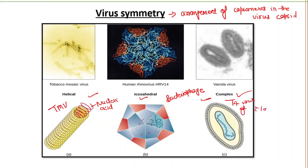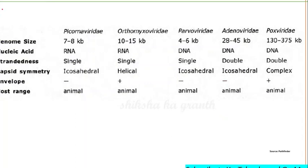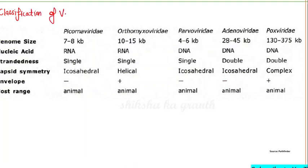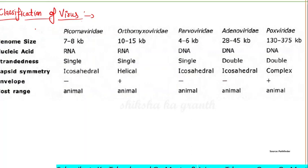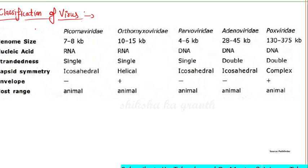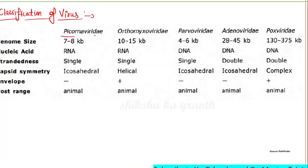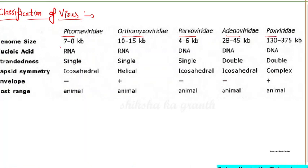Now let's talk about the classification of viruses. Viruses can be classified based on their host, structure, composition, mode of reproduction, or the nature of their disease. Currently viruses are classified with a taxonomic system placing primary emphasis on host type, strandedness, capsid symmetry, and envelope. Major families include Picornaviridae, Orthomyxoviridae, Parvoviridae, Adenoviridae, and Poxviridae.